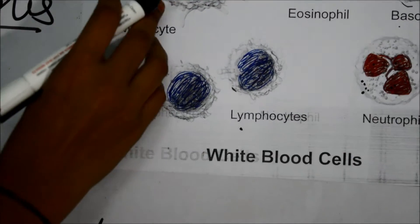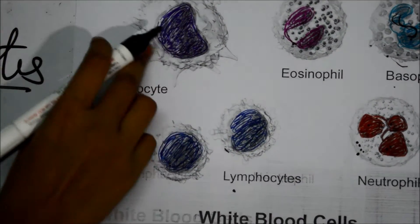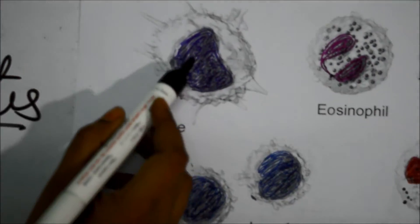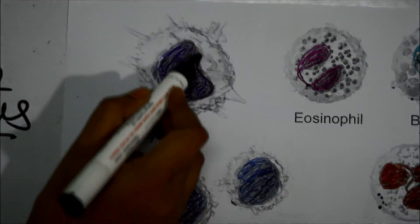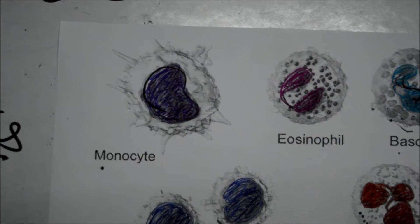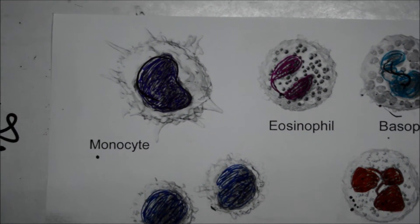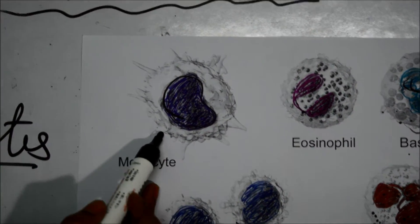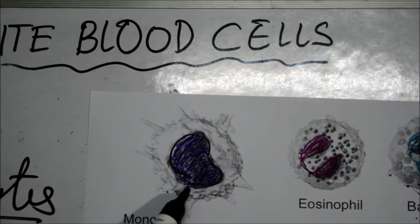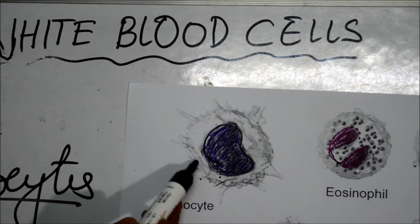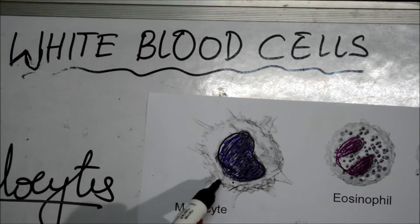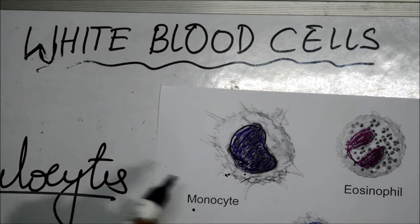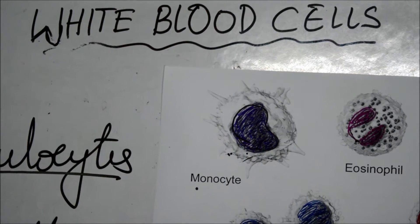Now let us see about the monocytes. These are the biggest of all white blood cells. The nucleus looks like a kidney shape. These cells invade the infected area and kill the bacteria. They also remove dead bacteria, dead cells, and other foreign material present in the infected area.